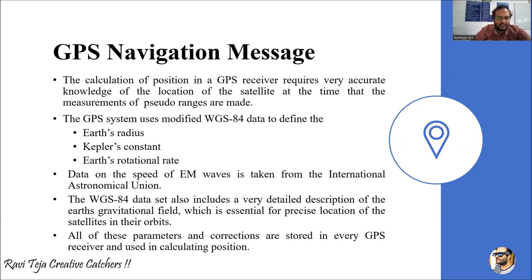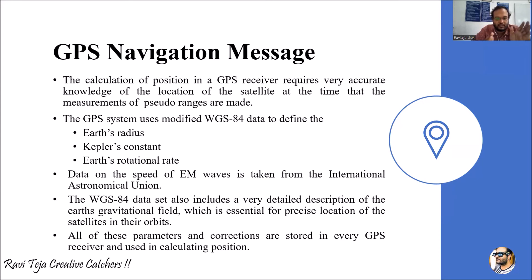These WGS 84 parameters include: first, the earth's radius; second, Kepler's constant; and third, the earth's rotational rate. Data on the speed of electromagnetic waves is also taken from International Astronomical Union standards.